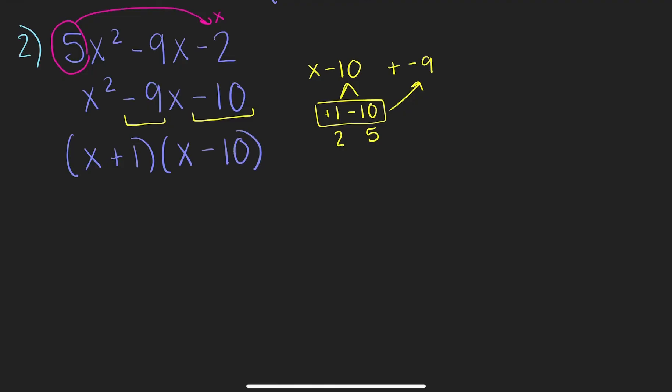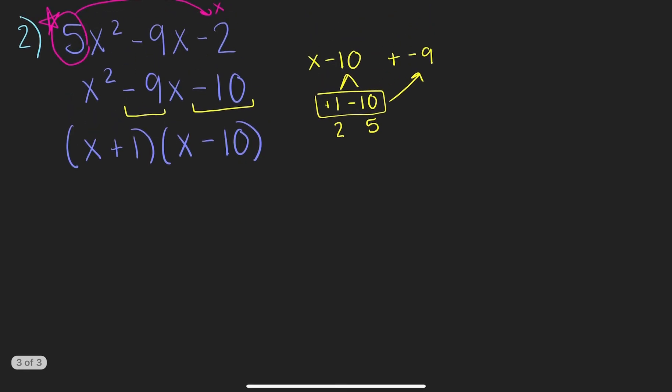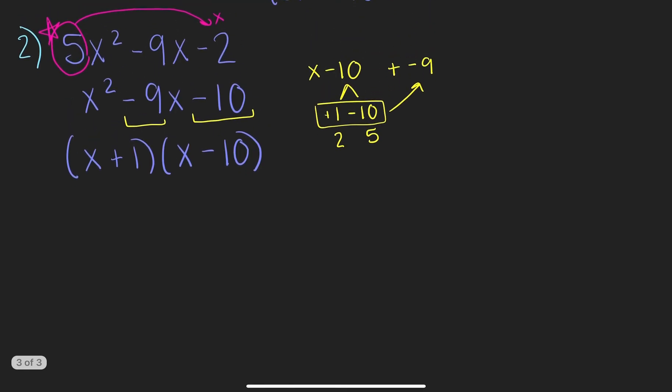Now, we cannot forget the 5 that we slipped. Can't forget that. So, we're going to divide each of these by 5. Just the last number. And simplify your fraction. x plus 1 fifth.